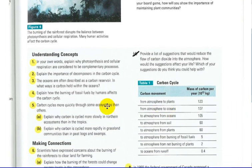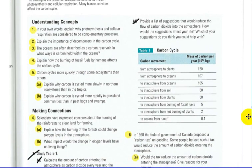Number three, the oceans are often described as carbon reservoirs. In what way is carbon held in the ocean? So, we talked about that as well. Explain how the burning of fossil fuels by humans is affecting the carbon cycle.